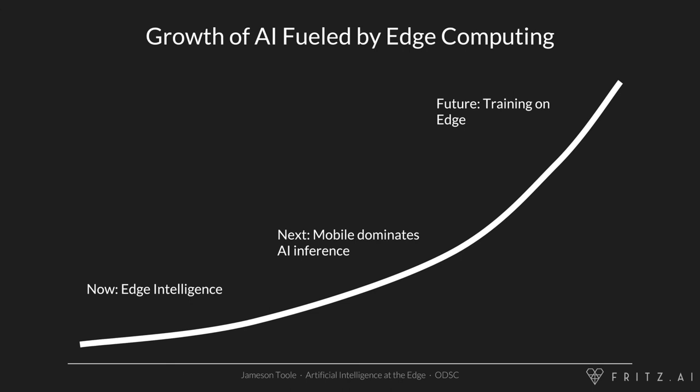If we think about the growth of AI over the next five to ten years, it's really going to be fueled by this transition to the edge. We currently have edge intelligence today — apps like Snapchat, smart speakers like the Amazon Echo, and self-driving cars and autonomous drones. In the near future, mobile is going to really dominate the inference side of AI and machine learning. And in the future, processing power and training algorithms will catch up to the point where you'll actually see people training models in a distributed fashion on edge devices. Training on the edge is more private, and you can leverage many more devices to reduce your costs.